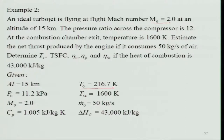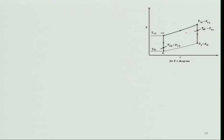The given data: altitude 15 km, so we can find T₀ and P₀ from tables. Mach number is given. For the ideal cycle, Cp = 1.005 kJ/kg·K, Tt4 = 1600 K, and mass flow rate of air = 50 kg/s. We will look at processes in the T-s diagram, moving from one point to another, evaluating all required properties to gain physical understanding.